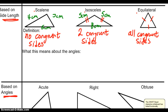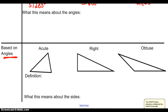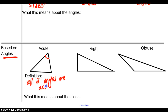Those are based on side lengths: scalene, isosceles, and equilateral. On the other hand, we could talk about triangles based on what their angles look like. An acute triangle is a triangle with all acute angles — all three angles are acute. For example, it could have angles that were 60, 50, and 70 degrees. A right triangle is a triangle with one right angle — one 90-degree angle.